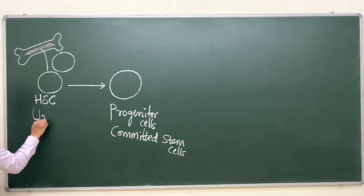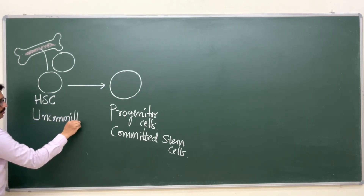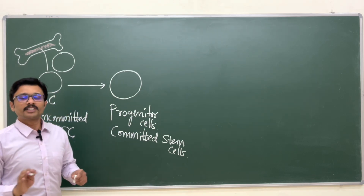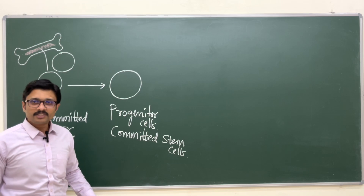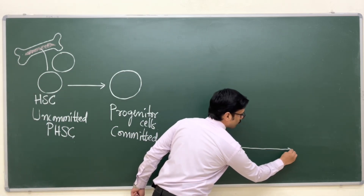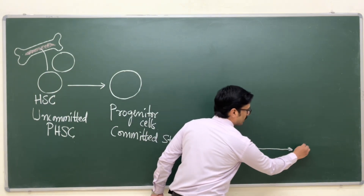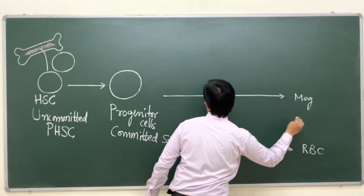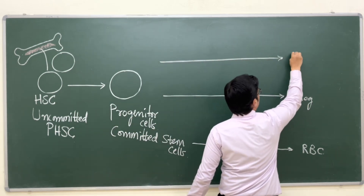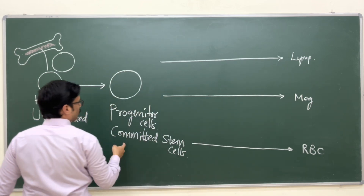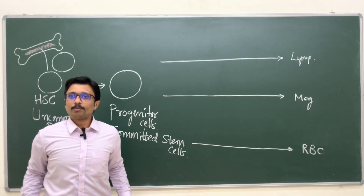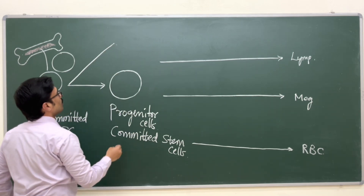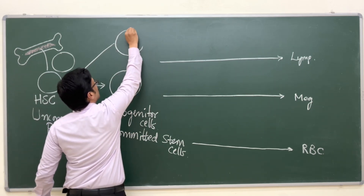Uncommitted pluripotent hemopoietic stem cells differentiate into progenitor cells, which are committed stem cells. These progenitor cells are committed — they can give rise to only one type of blood cell: either red blood cells, or a megakaryocyte, or lymphocytes. There are mainly two types of progenitors differentiated from the stem cells.